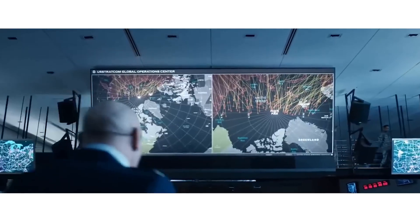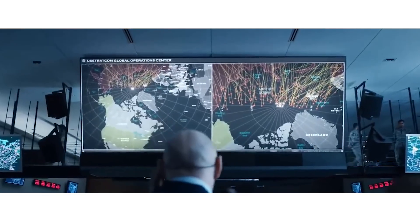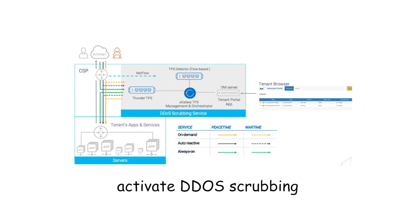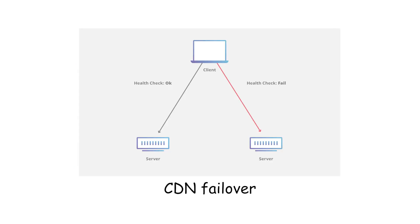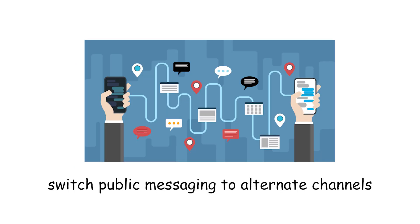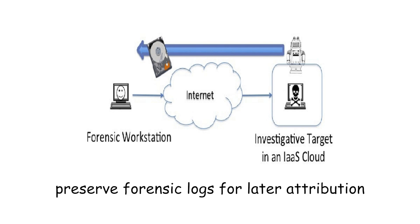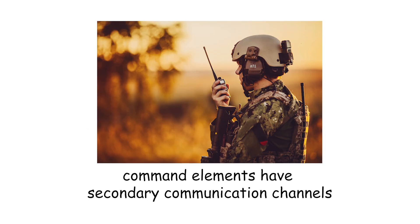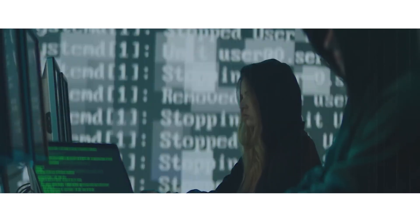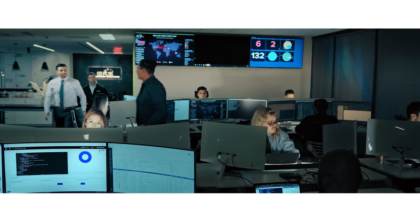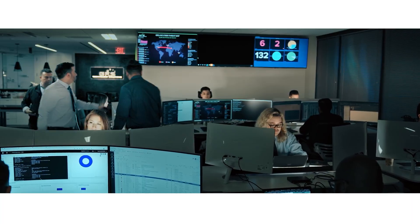Defenders facing this level must execute continuity playbooks: activate DDoS scrubbing and CDN failover, switch public messaging to alternate channels, preserve forensic logs for later attribution, and ensure command elements have secondary communication channels. Tactical trade-offs for attackers are low cost and plausible deniability. Trade-offs for defenders are rapid restoration and resilience under public pressure.